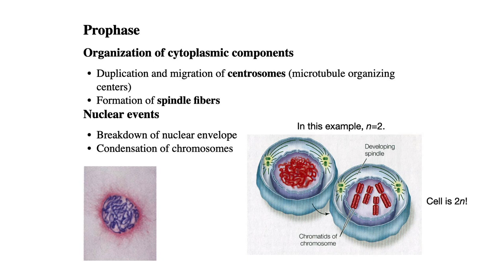So here's prophase. We've got cytoplasmic components — we're going to be moving chromosomes around. In order to do that, we need cables and cytoskeleton structures that will tow all the chromosomes to their appropriate places. Central to that is a structure called the centrosome — completely different from the centromere. Centromere is a location on the chromosome. Centrosome is this curious little structure in our diagram.